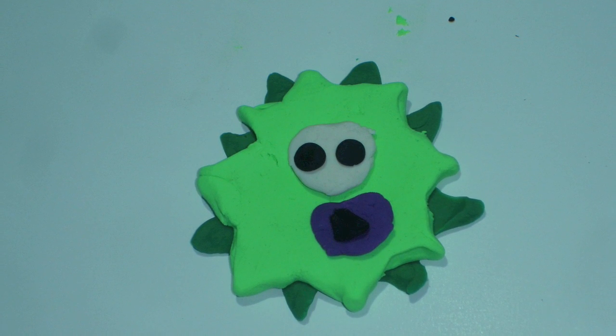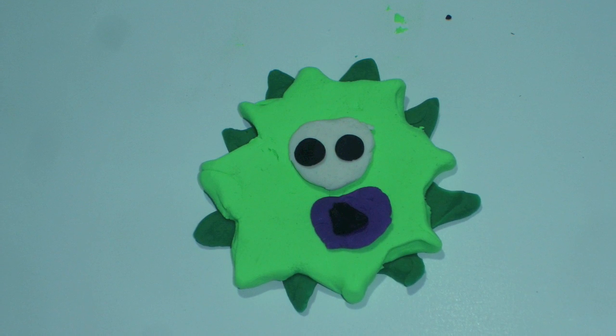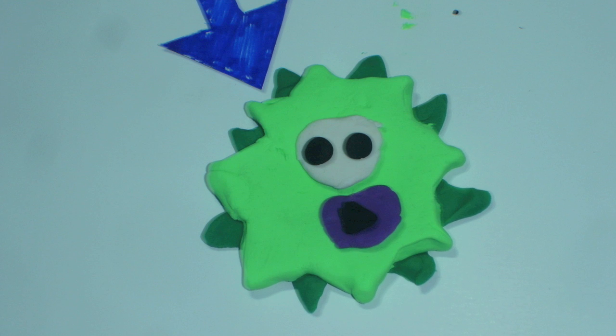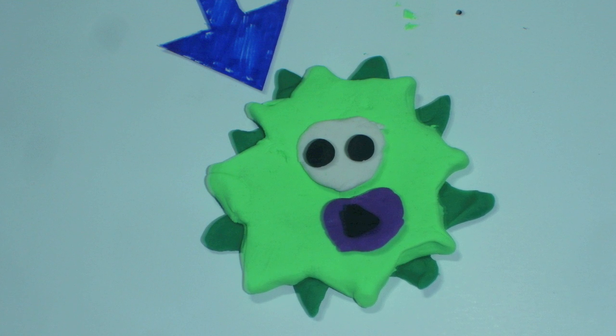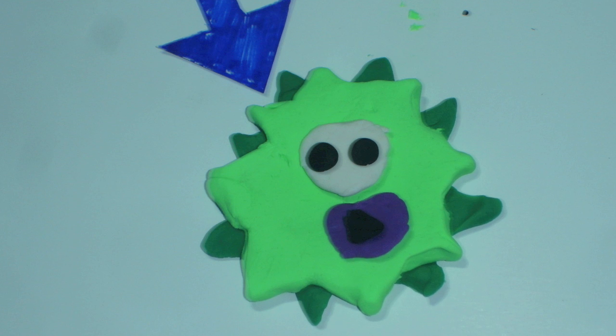This is a pollen grain. Notice how the pollen grain is enlarged because it is usually microscopic. This is the outside of the pollen. It fits into the stigma like a key fits into a lock.